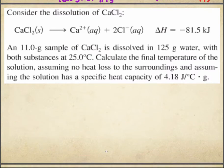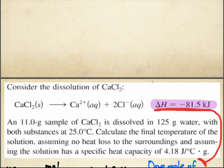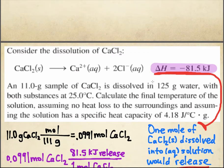11 grams of calcium chloride dissolved in 125 grams of water. Both substances at 25 degrees. Calculate the final temperature of the solution, assuming no heat loss to the surroundings. Specific heat capacity of 4.18. Oh yeah, this is a balanced thermochemical equation. So, this negative 81.5 kilojoules means it's exothermic. So, it's going to warm up. And, I've got to figure out how much it's going to warm up. 11 gram sample is added to 125 grams of water. This looks similar to the last question, doesn't it? I think it does.